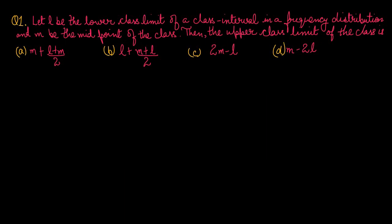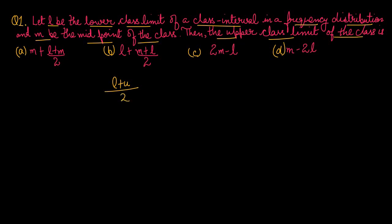Question number 1: Let L be the lower class limit of a class interval in a frequency distribution and M be the midpoint of the class. Then the upper class limit of the class is? We know that (lower limit + upper limit) / 2 = midpoint. Our target is to find the upper class limit U. So U = 2M - L. Option number C is the right one.